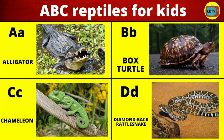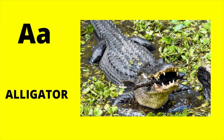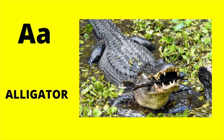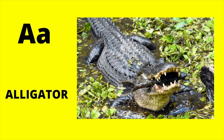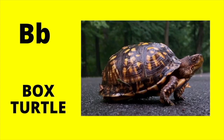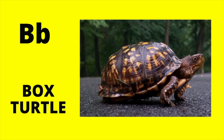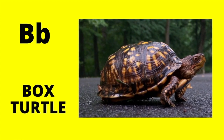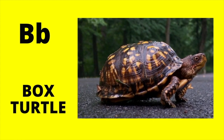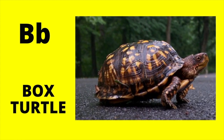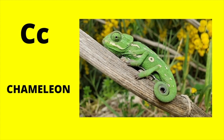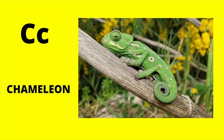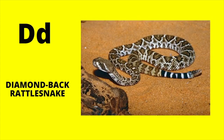ABC Reptiles for Kids. A is for Alligator. A, Alligator. B is for Box Turtle. B, Box Turtle. C is for Chameleon. K, Chameleon.